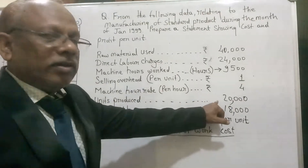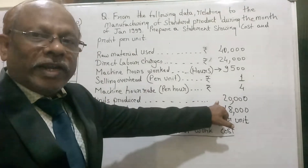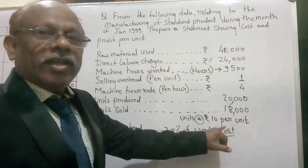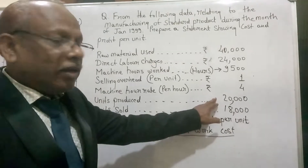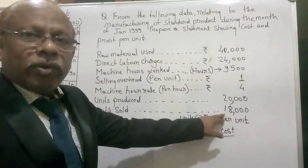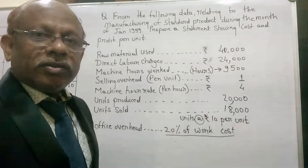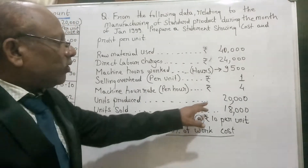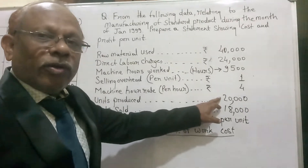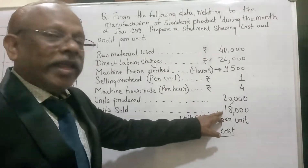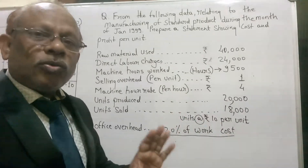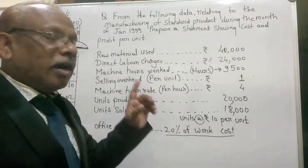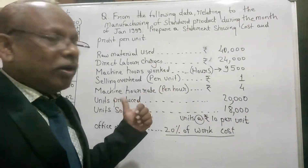Units produced is 20,000, and units sold is 18,000, so the difference is 2,000 units. That 2,000 units is our closing stock, because out of 20,000 units produced we have sold only 18,000 units. We will see how to calculate the per-unit price of that closing stock in the problem.